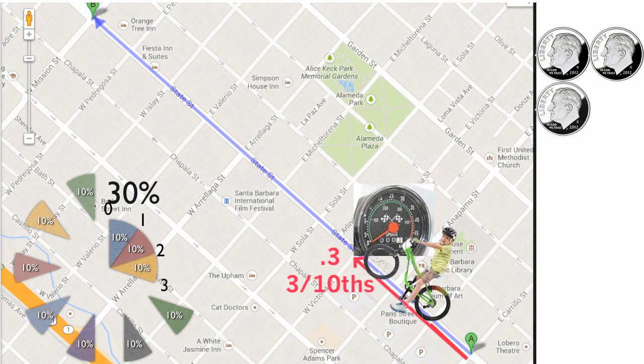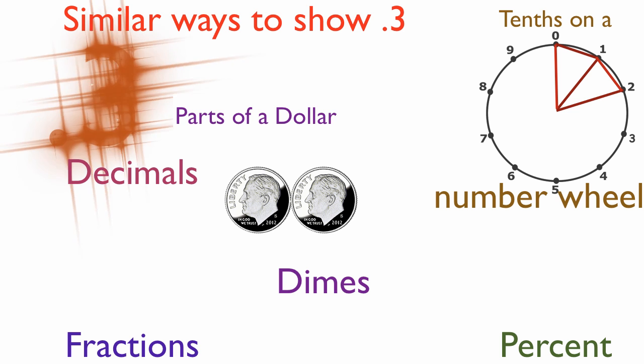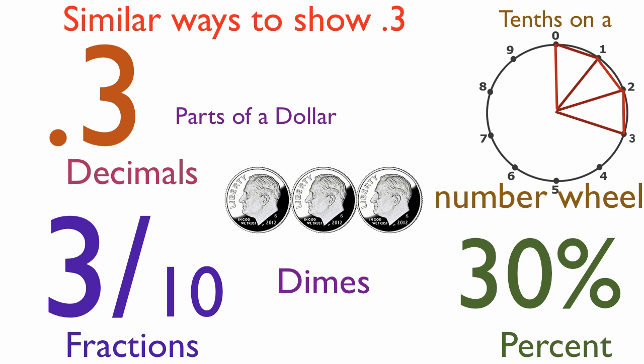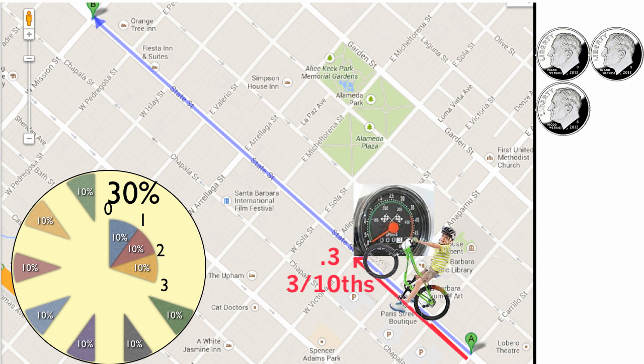Chris goes forward another block and picks up a third dime. He has gone 0.3 and three-tenths and 30% of a dollar. He has gone to three on the number wheel, and he has three dimes, which is three-tenths or 30% of a dollar. I hope you can get ahead of me on some of these.